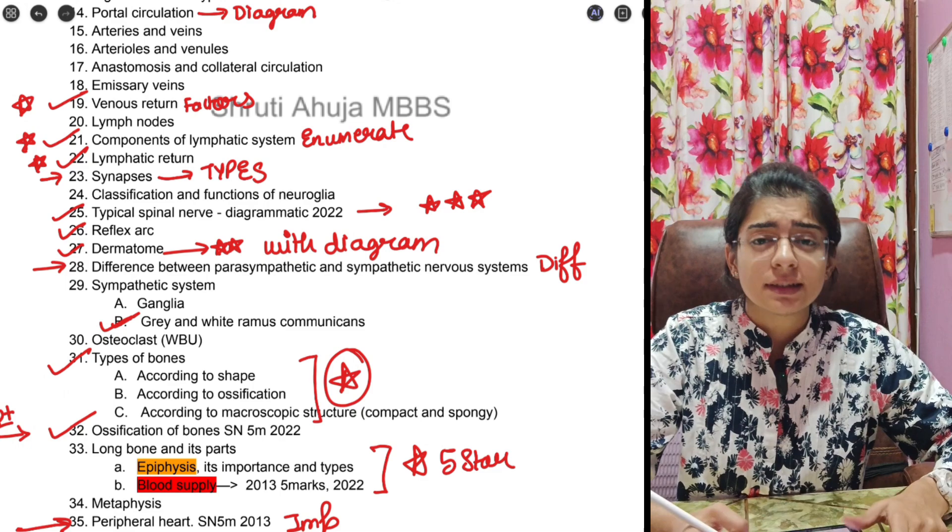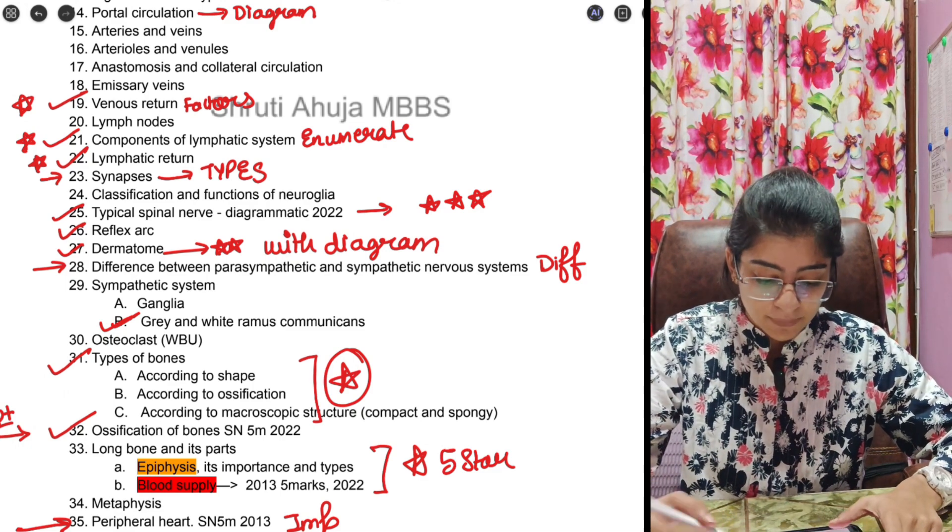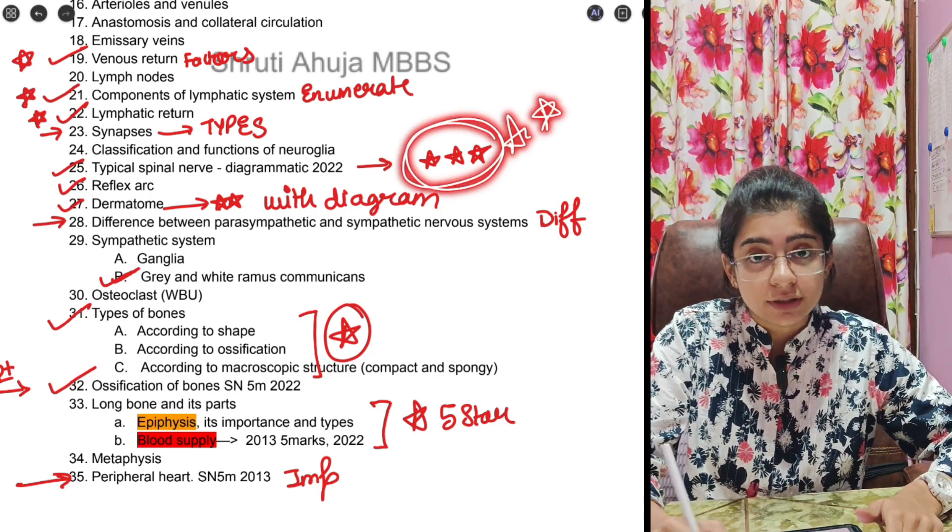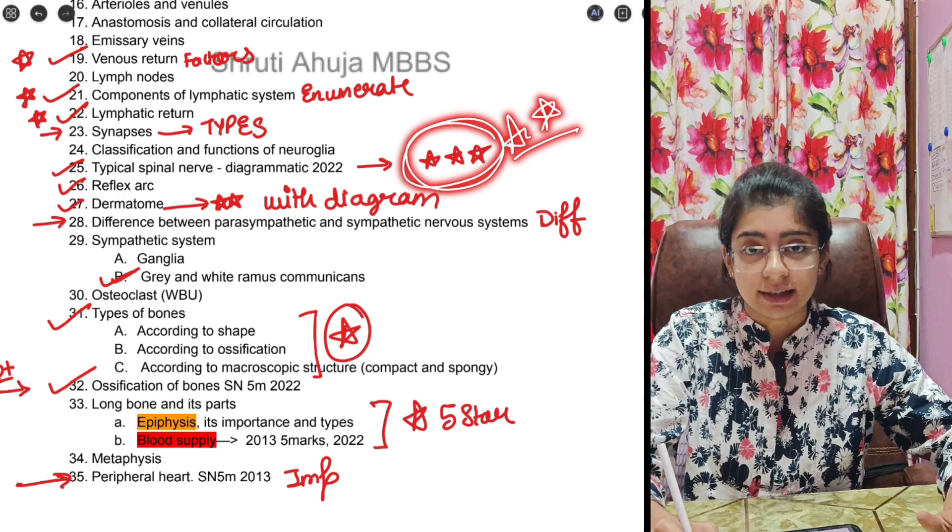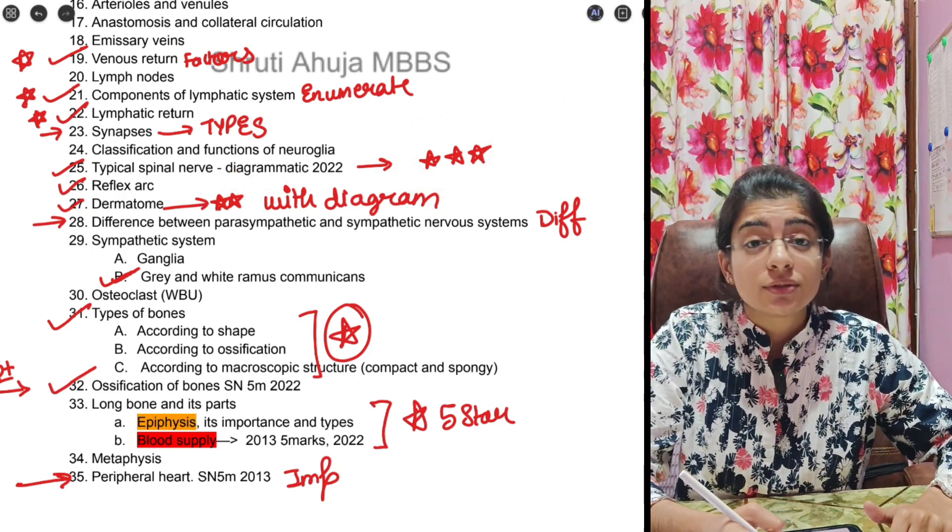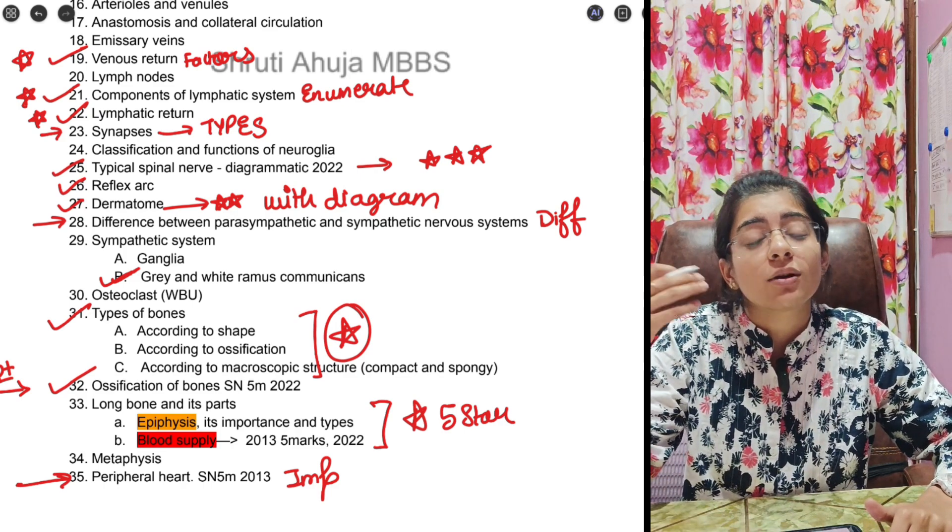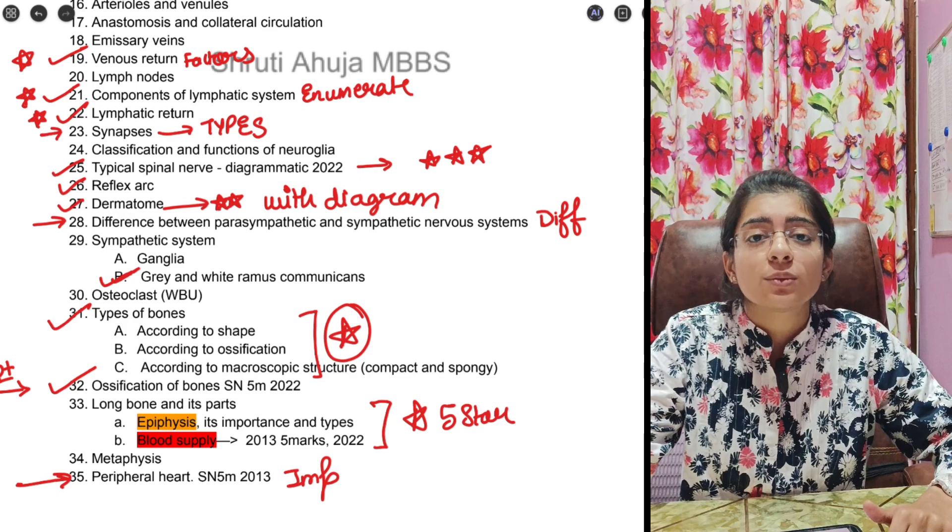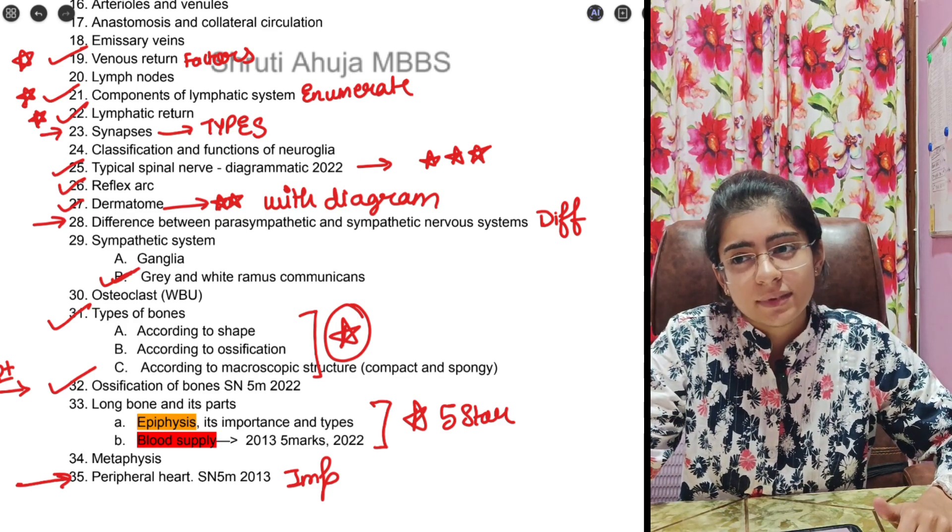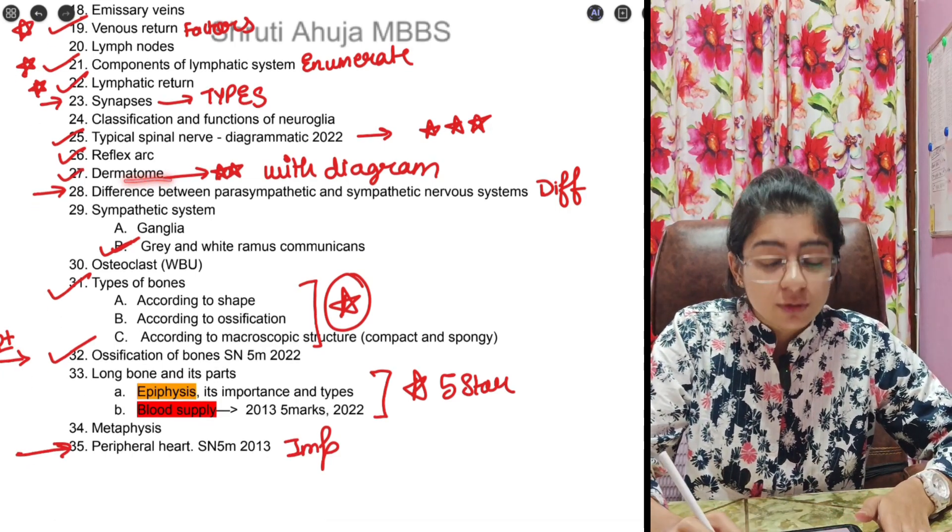Next is synapses, it is very common but we usually forget all the types and we miss it. Then typical spinal nerve diagram, I would ensure it is a five mark question as diagram only. Next, if it comes as short note then don't just draw the diagram, do also write how many pairs of spinal nerves, cranial nerves, how the nervous system is divided. Try to leave a page and fill it afterwards. Next is dermatome, dermatome also has a diagram which is given but you need to refer to that also if you want to make it more appealing.